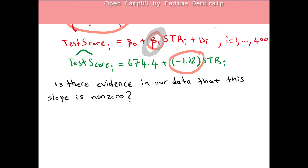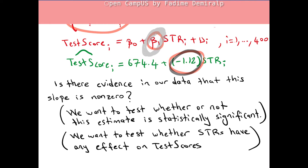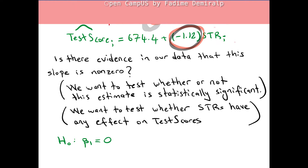We want to test whether or not this estimate is statistically significant — whether student-teacher ratios have any effect on test scores. The null hypothesis considers the slope coefficient to be zero, meaning student-teacher ratios don't have any significant effect on test scores.